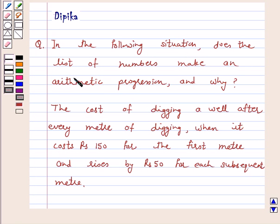In the following situation, does a list of numbers make an arithmetic progression and why? Situation is the cost of digging a well after every meter of digging when it costs rupees 150 for the first meter and rises by rupees 50 for each subsequent meter.